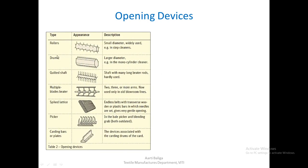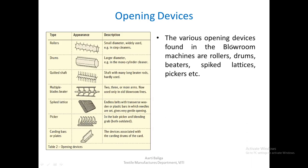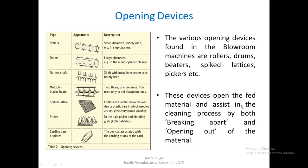What are the various devices one might see in the blow room? There are rollers, drums, shafts, multiple bladed beaters, spike lattices, pickers, as well as carding bars or plates. These devices open the feed material and assist in cleaning by both breaking apart and opening out the material. We shall see later what is meant by breaking apart and what is meant by opening out.